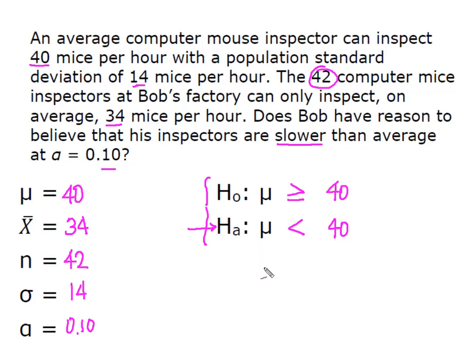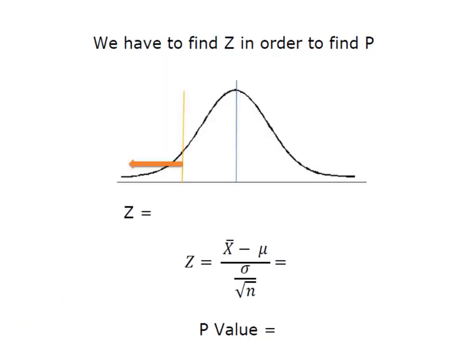Last thing is I need to determine what type of test I'm going to run. Well I was given the population standard deviation and when I test for the mean with the population standard deviation known, I know that I'm going to run a one sample z-test. So in order to find a P-value we have to find a z-value. And that's because remember that our P-value is simply the probability of having gotten a test statistic or a test value more extreme than the one we got.